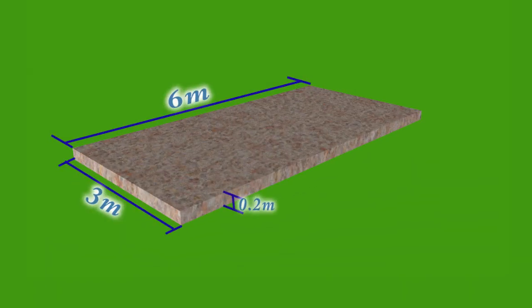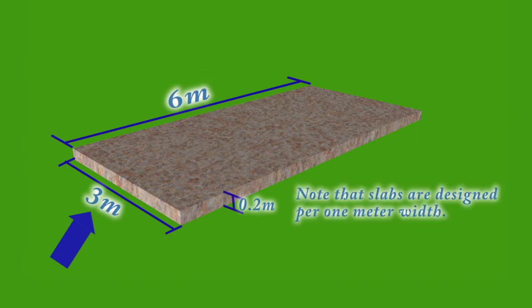Example: Calculate the design load for a reinforced concrete slab of length 6 meters, width 3 meters, and thickness 0.2 meters. Since the slab is one-way, the span is 3 meters. Note that slabs are designed for 1 meter width.